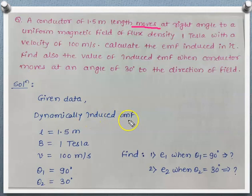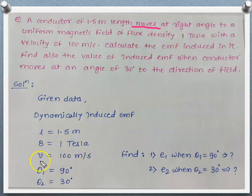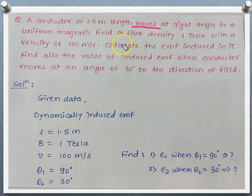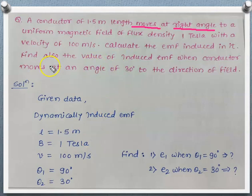Writing the given data: length L = 1.5 meters, magnetic flux density B = 1 tesla, velocity V = 100 meters per second. There are two conditions: first, the conductor is moving at a right angle (90 degrees), so θ₁ = 90°; second, the conductor moves at an angle of 30 degrees, so θ₂ = 30°.